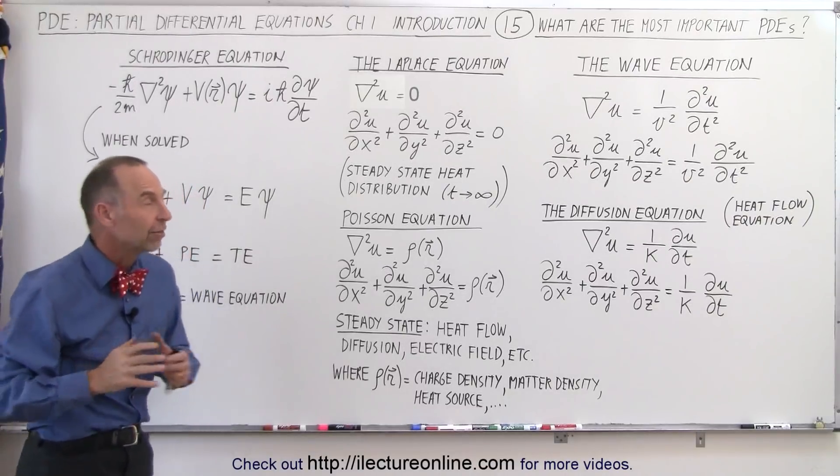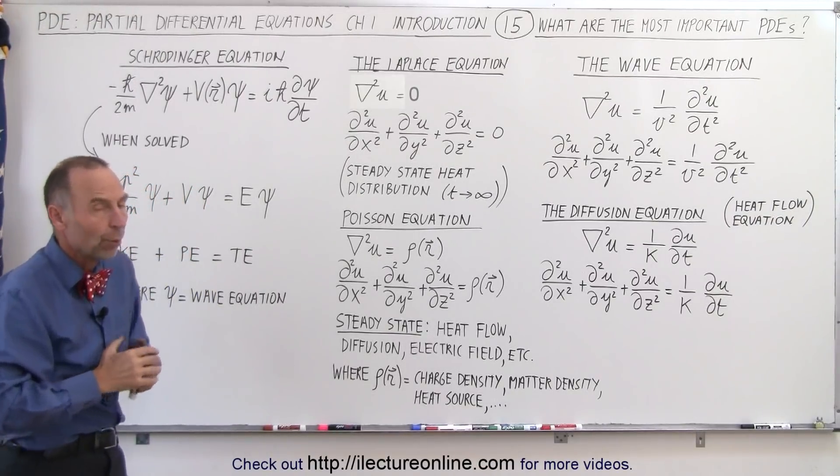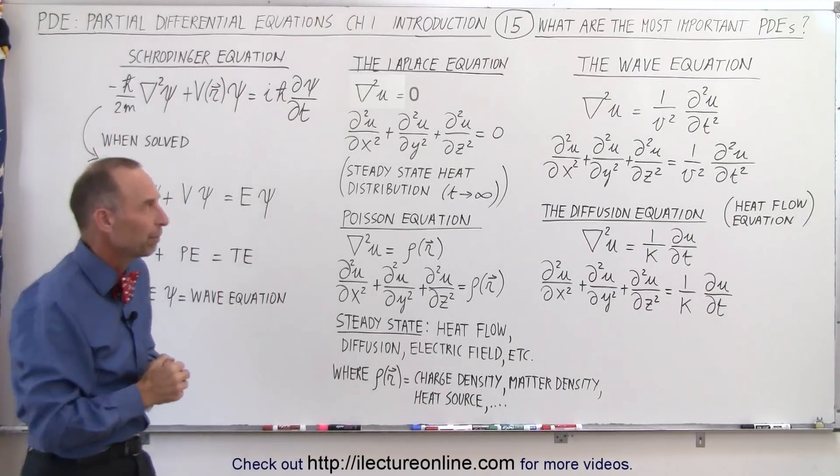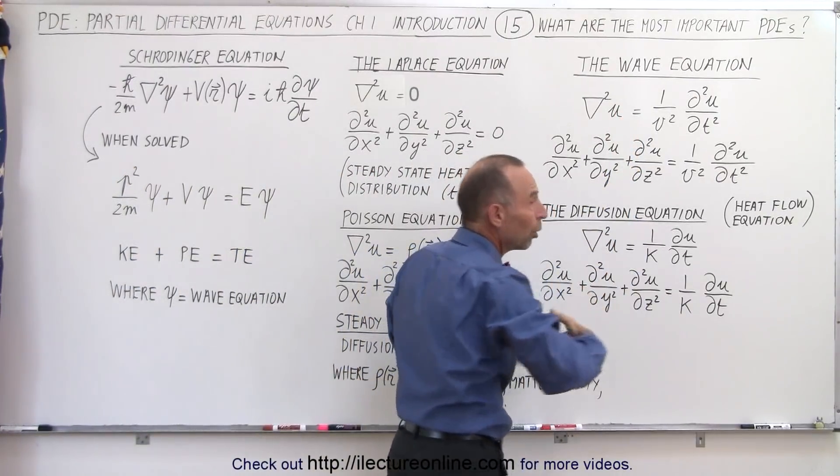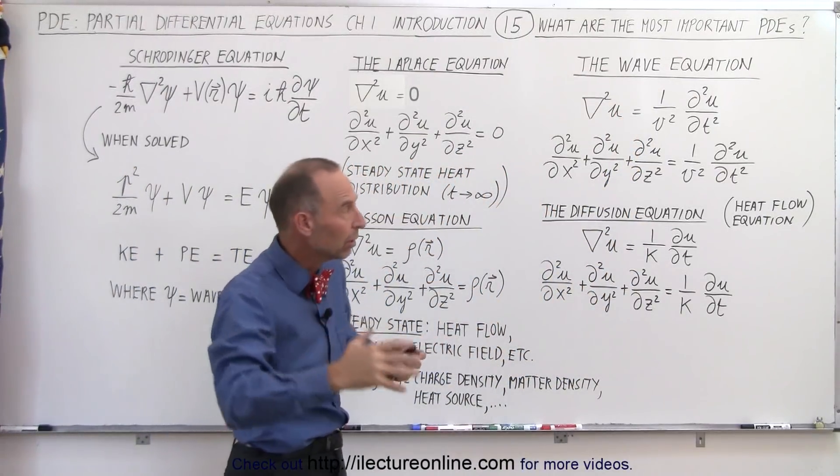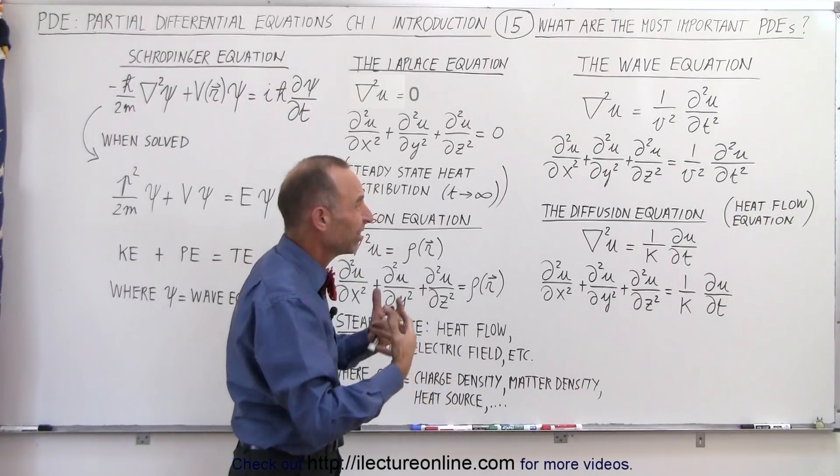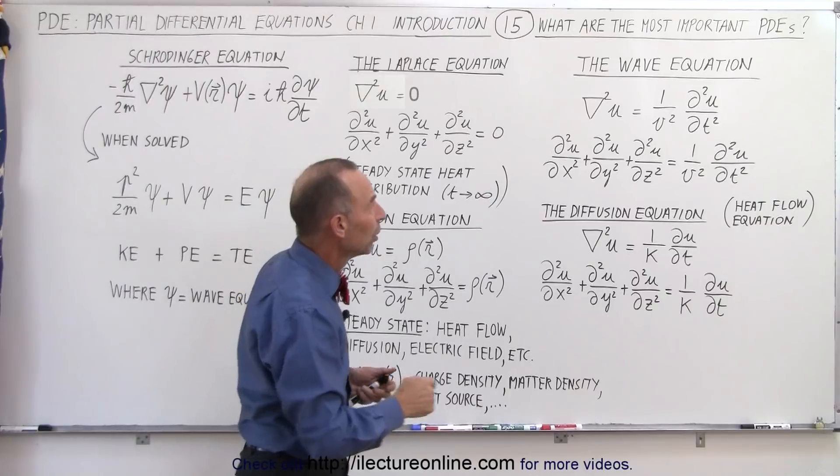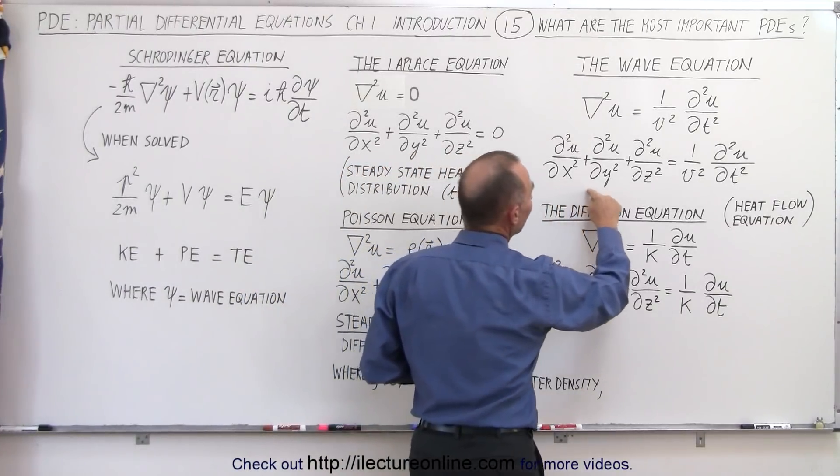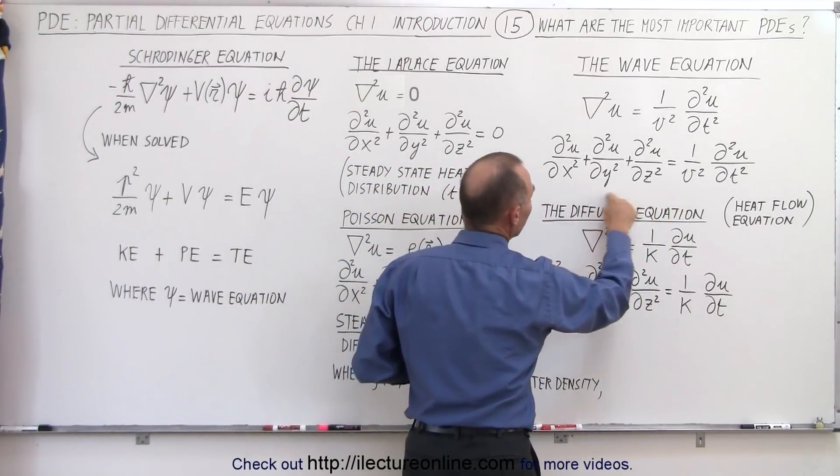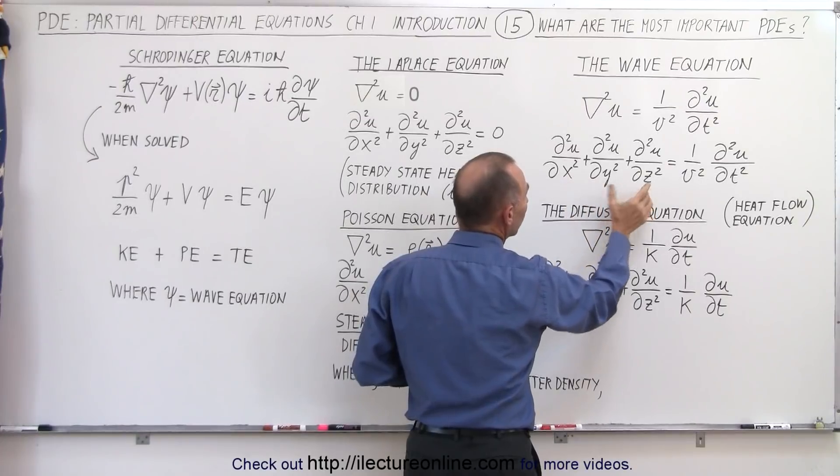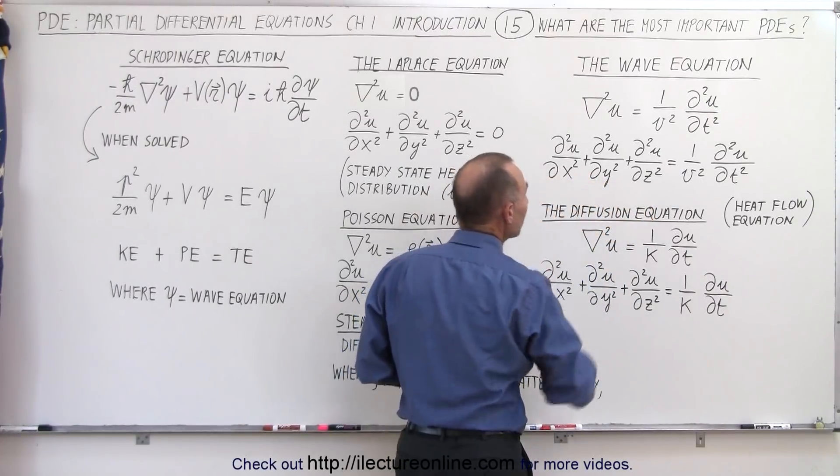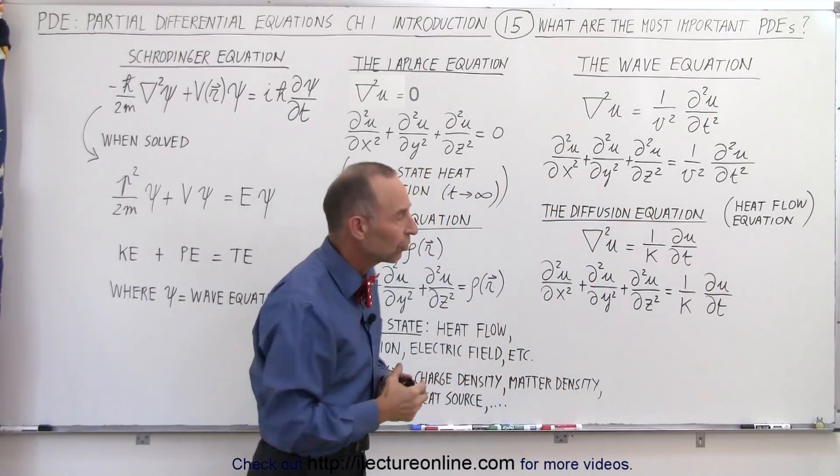Well, the wave equation is used to describe a wave - a wave on a string or an electromagnetic wave, a light wave, whatever it may be. It can be described by the wave equation. Notice on the left side we could have a three-dimensional Laplacian, x, y, and z, or it could be two-dimensional or one-dimensional. It works in any of those cases.